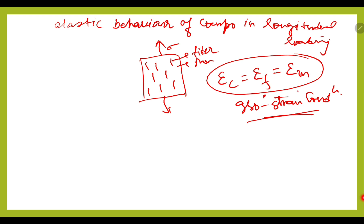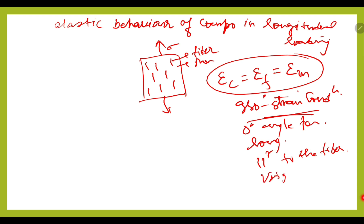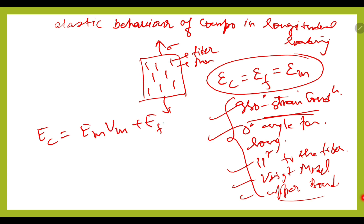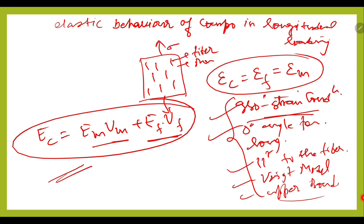This condition is also known by several different names: ISO strain condition, zero-angle condition, force condition, longitudinal or parallel-to-fiber condition, Voigt model, and upper bound condition. In all these cases, if asked for the elastic behavior of a composite in longitudinal loading, we use the formula: EC = EM·VM + EF·VF, where the first term is for the matrix and the second is for the fiber.